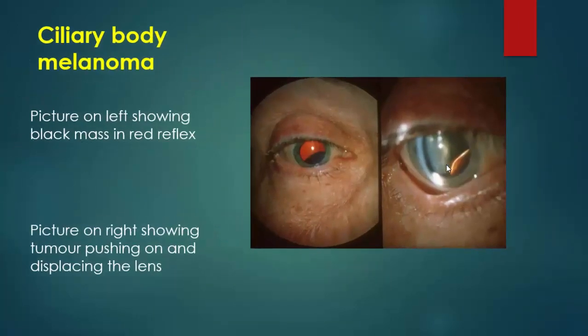In this photo of ciliary body melanoma we can notice that there is a mass arising from the ciliary body, causing pushing and displacement of the lens.